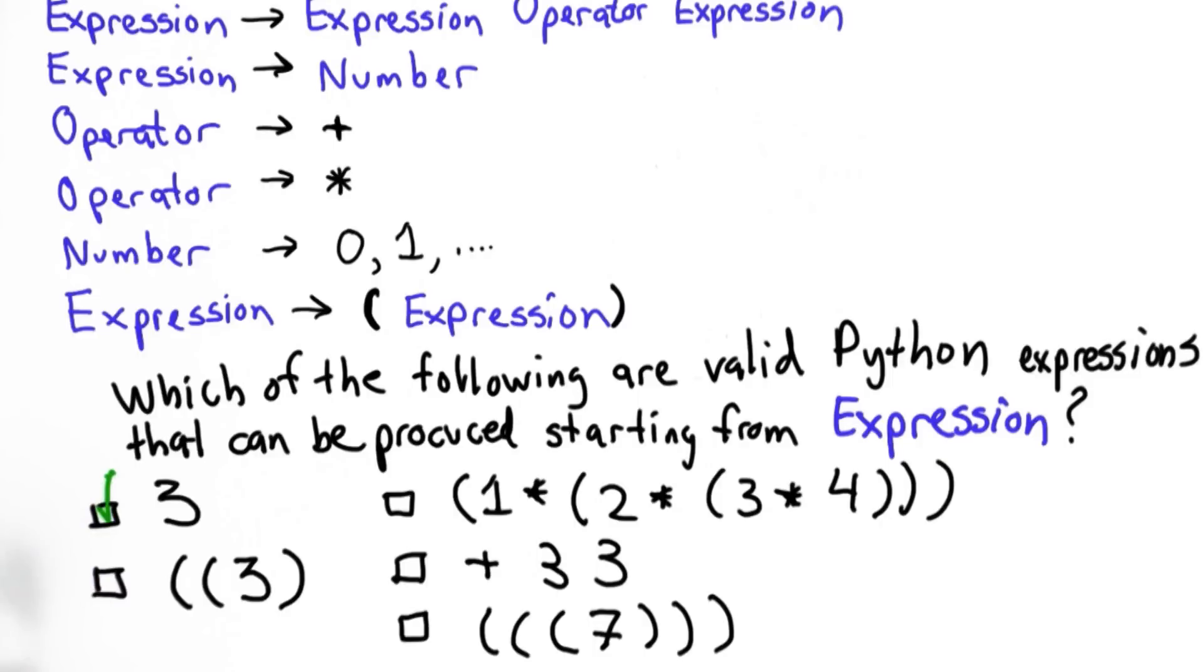So the answer is the first one. This is just the number 3, and we can get 3 from expression by following this rule, starting from expression, replacing it with number, and then replacing number with the number 3.